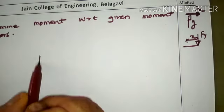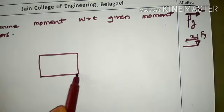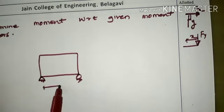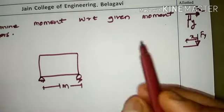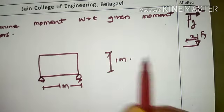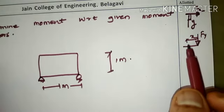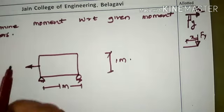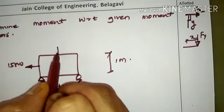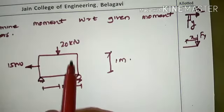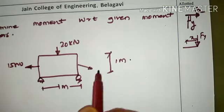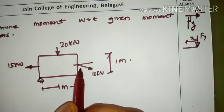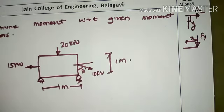Consider a grid of dimension 1 meter along the x-direction and 1 meter along the y-direction. This is the example we are going to use to calculate moment with respect to a given moment center. The grid has been subjected to a horizontal force of 15 kN, a vertical force of 20 kN, and an inclined force component of magnitude 10 kN.